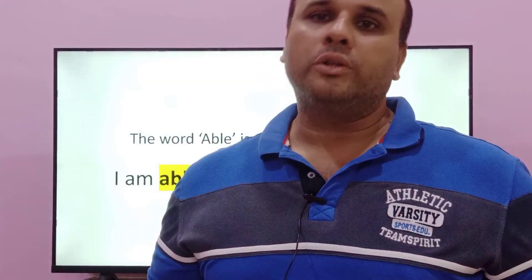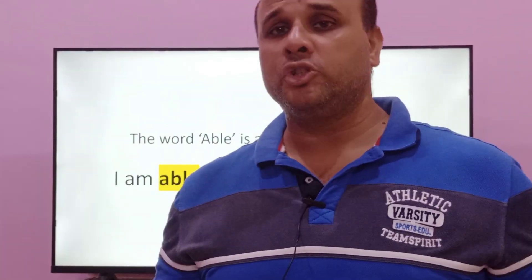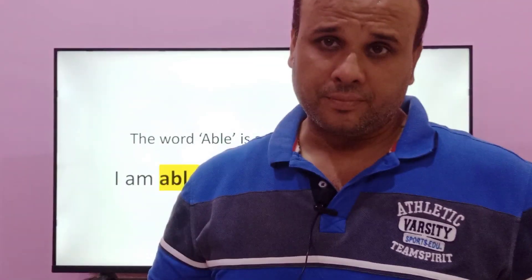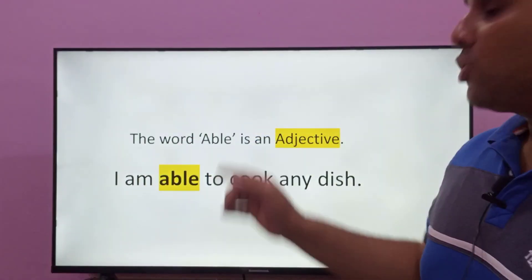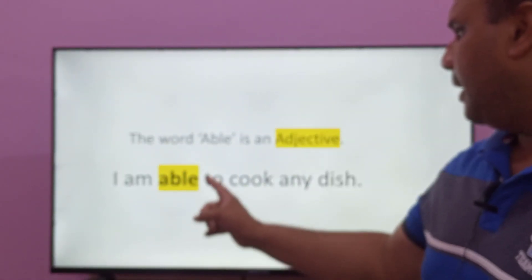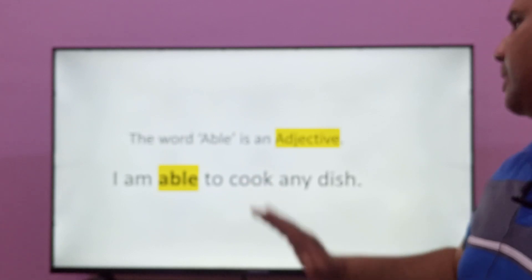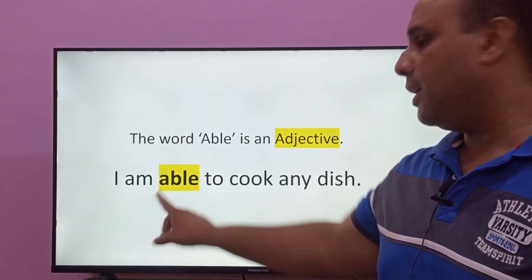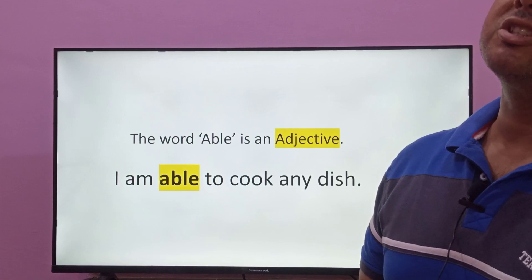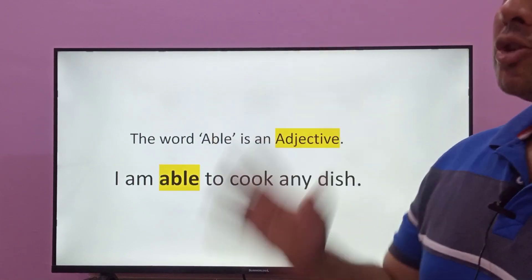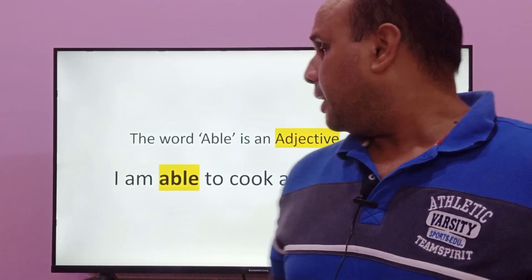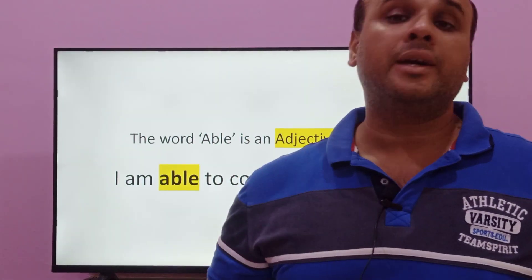Adjectives — what do adjectives do? Adjectives tell us some information about a noun. Now let's see this example sentence: 'I am able to cook any dish.' The word 'able' is used here as an adjective. This confirms that the word 'able' functions as an adjective in a sentence.